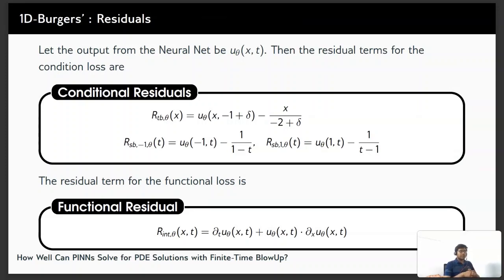Now, let the output from the neural network be u_theta. Then the residual terms for the condition loss are the initial condition and two of the boundary conditions. Similarly, we can define the residual term for the functional loss which is given below.